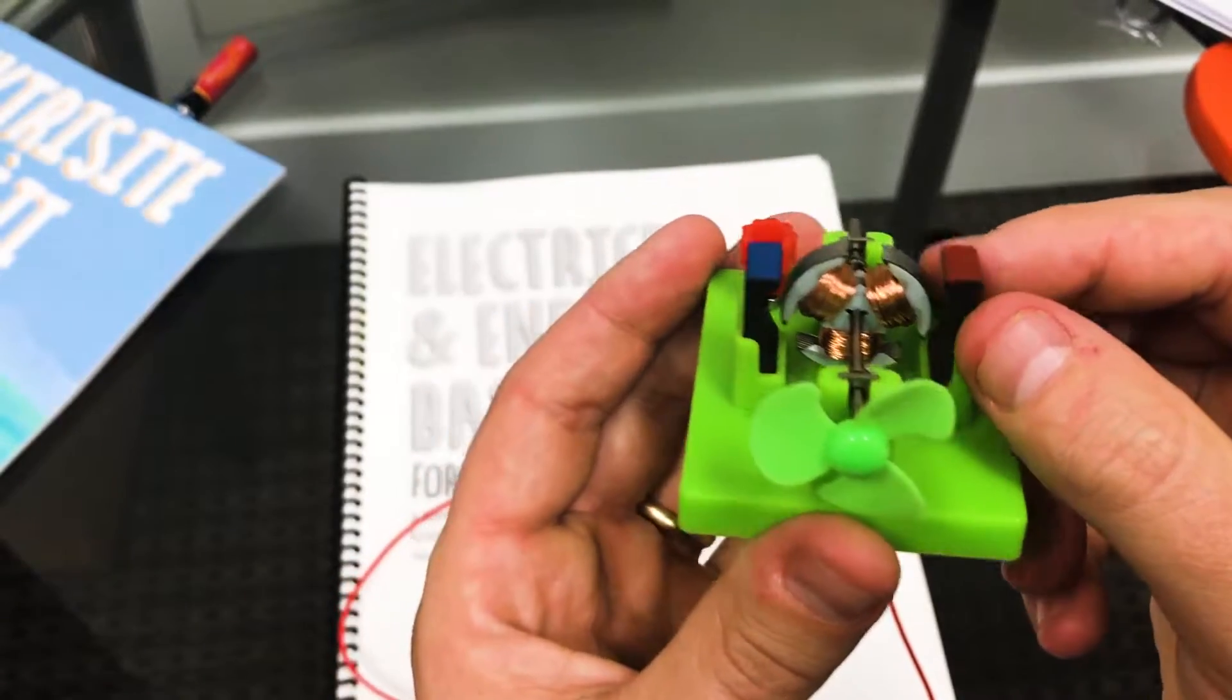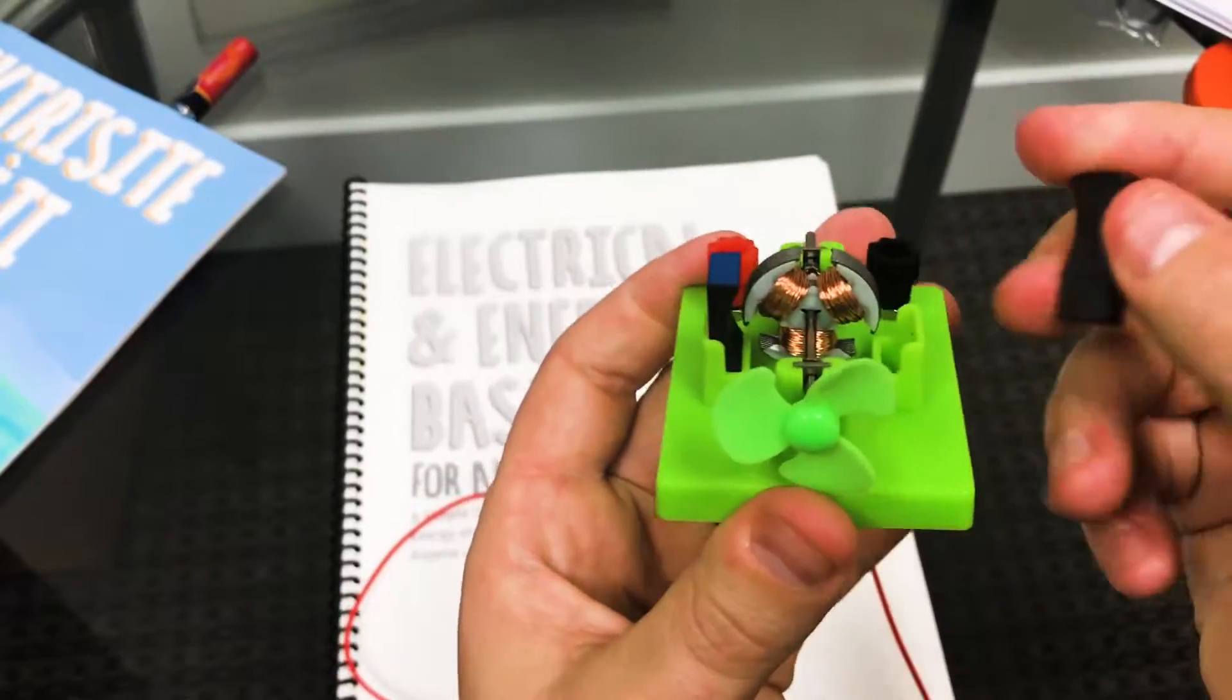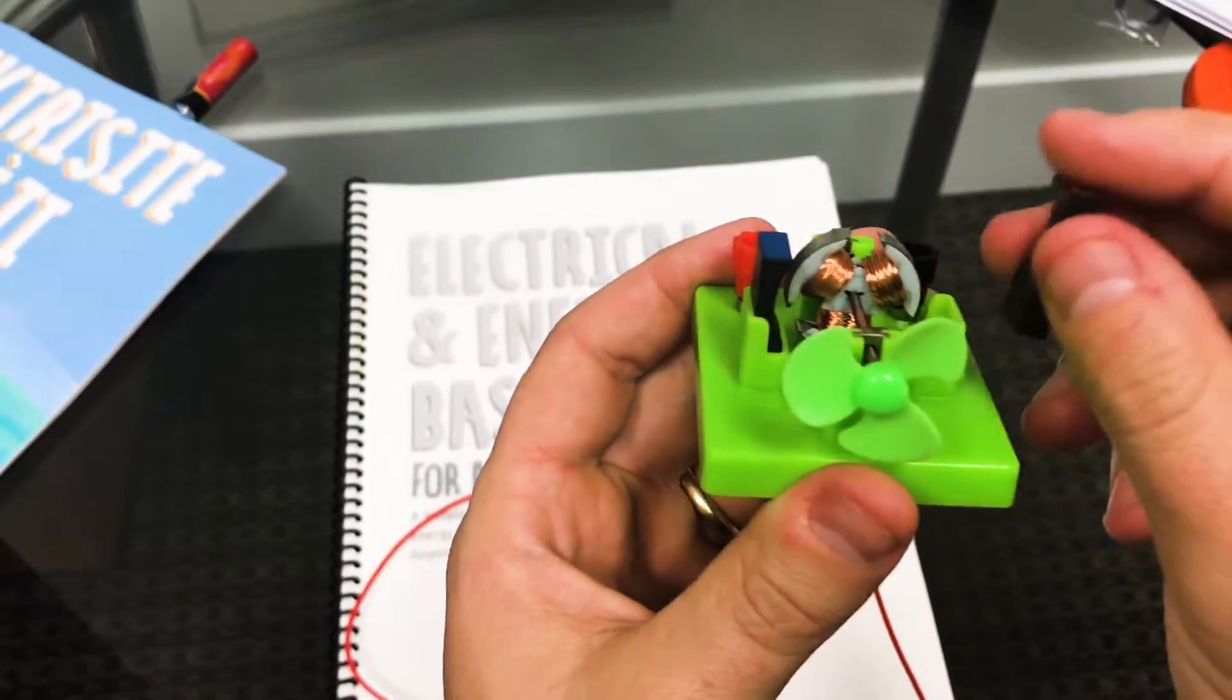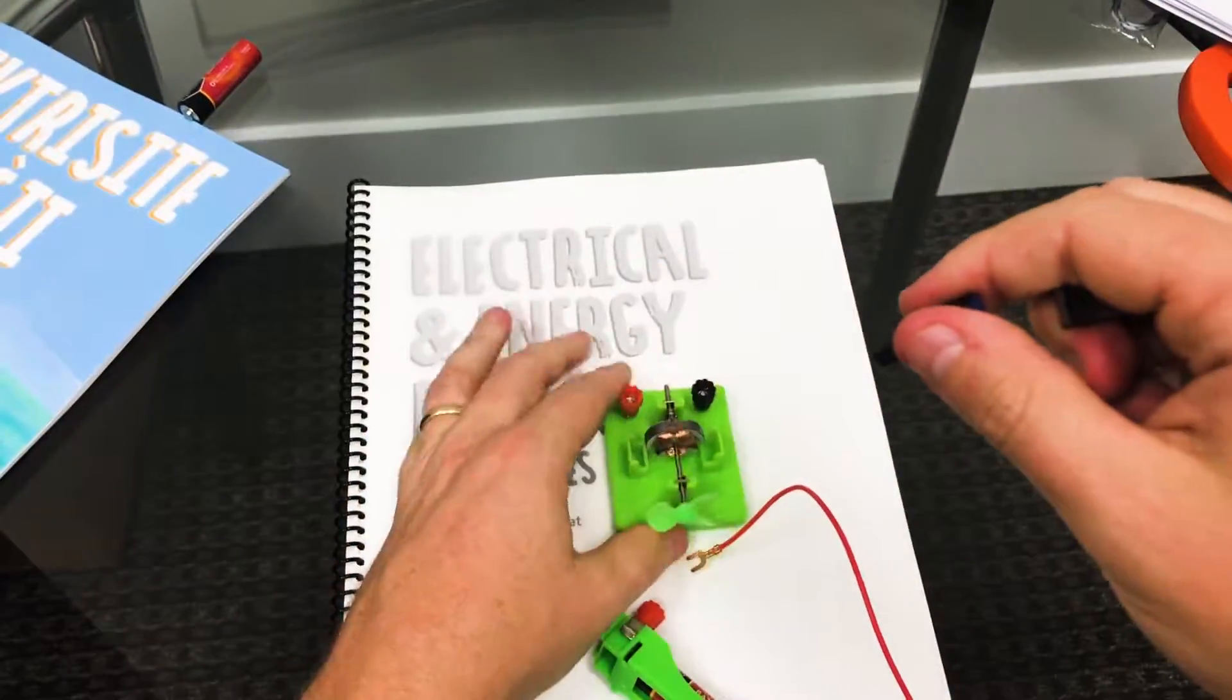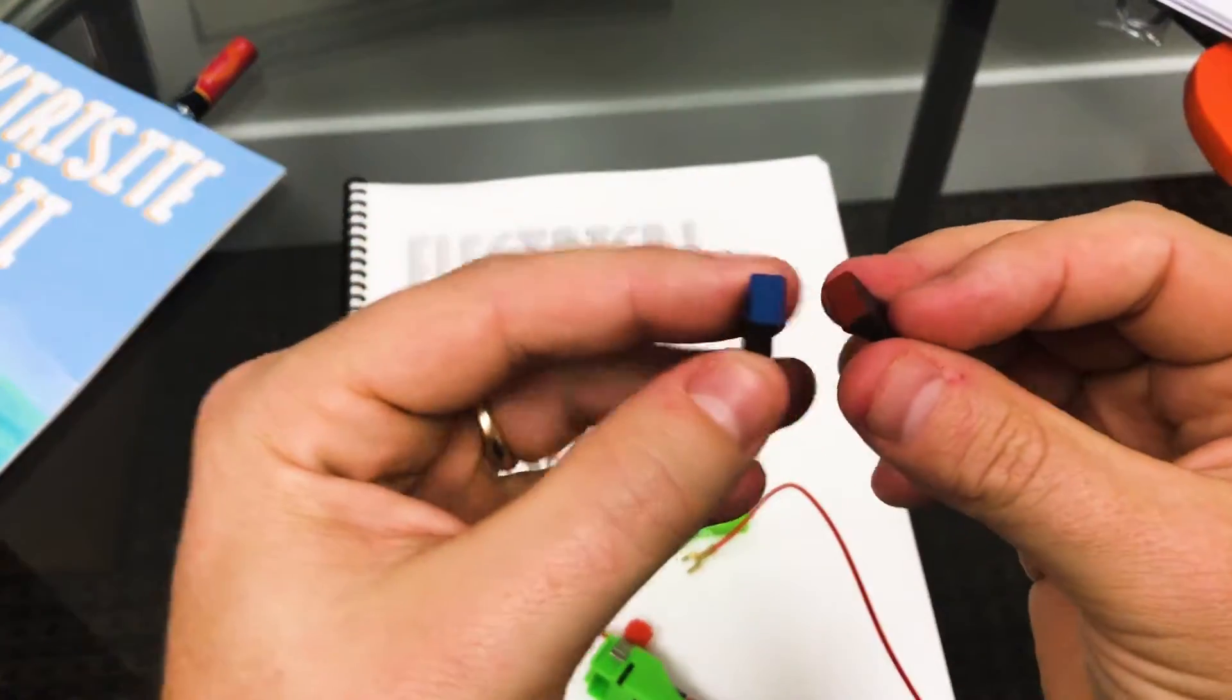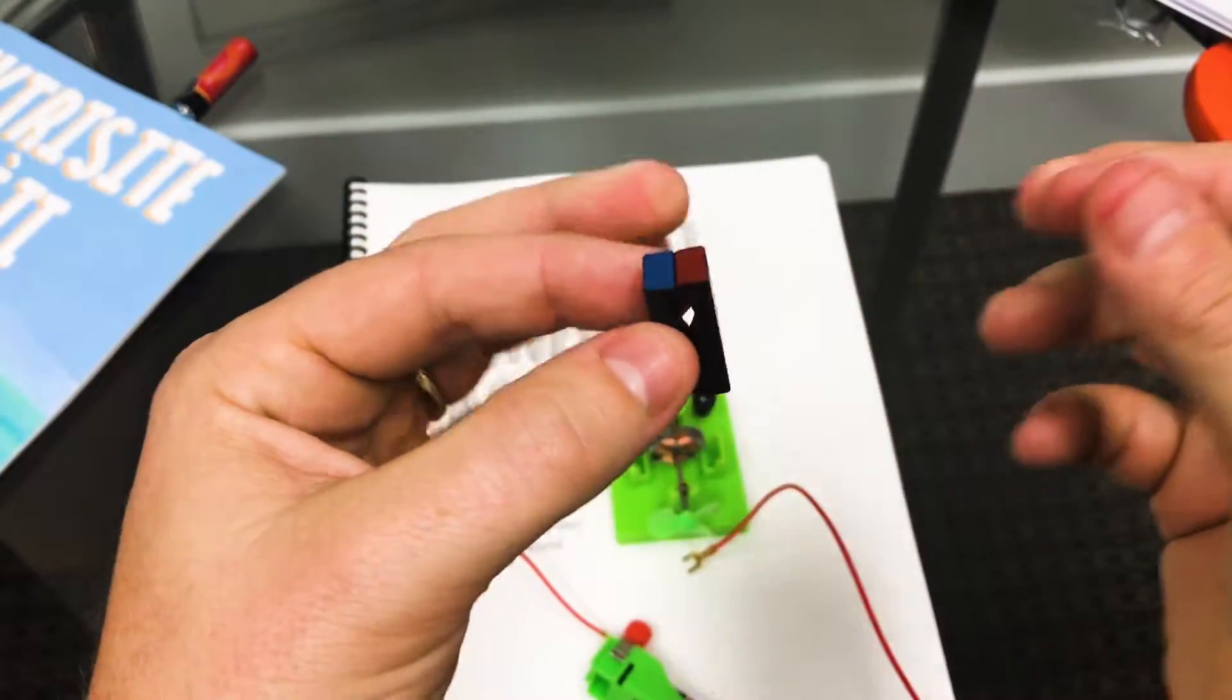It's got two permanent magnets here on the outside. In a typical AC motor we would call this the stator and the inside part the rotor, but of course this is a DC motor. You can see here that they're opposite polarity because they stick together - one half is negative and the other half is positive.